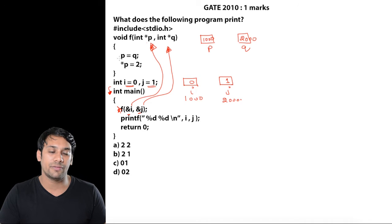In the first line, p equals q, meaning whatever value is in q will be copied into p. So p now stores 2000.